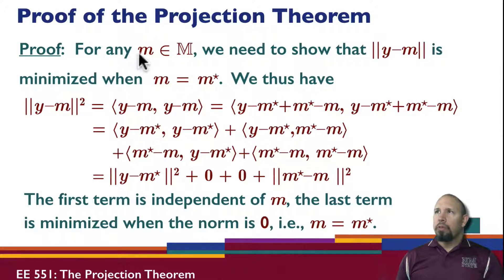Here's the proof. We start with any m in the subspace M. We need to show that the norm of y minus m is minimized when m is equal to m star. That's what we're setting out to prove, and so hopefully all of this will do that.